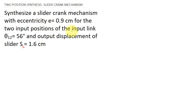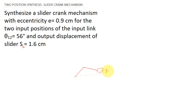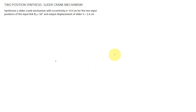Eccentricity means: let this be the crank and this be the piston. Usually this will be the line of action, but here the line of action is a bit different — there will be an eccentric distance e from the line of action.